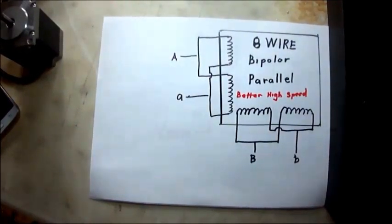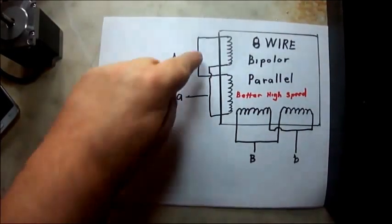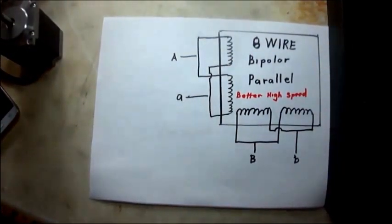This is eight wire in a bipolar configuration where the coils are in parallel with each other. This will give you better high speed performance, more torque on the high end.